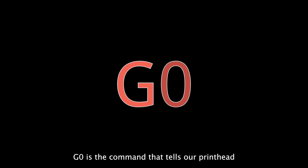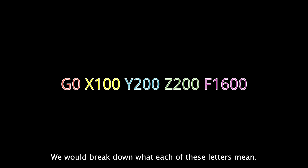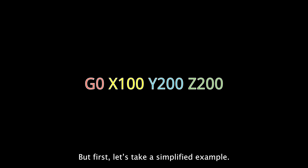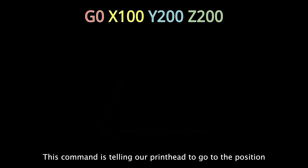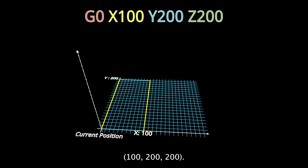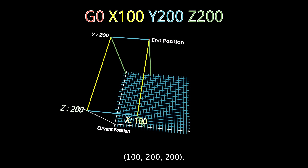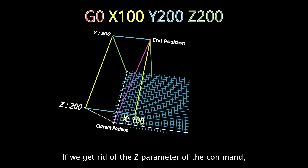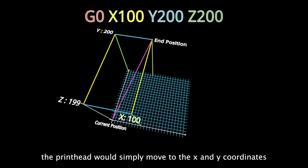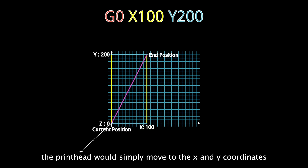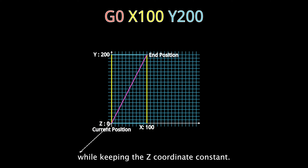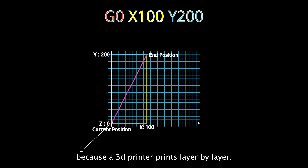Now G0 is the command that tells our printhead to move to a particular point in this space. We would break down what each of these letters mean, but first let's take a simplified example. This command is telling our printhead to go to the position 100, 200, 200. If we get rid of the z-parameter of the command, the printhead would simply move to the x and y-coordinates while keeping the z-coordinate constant. This would often be the case because a 3D printer prints layer by layer.